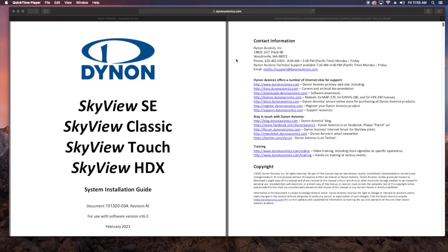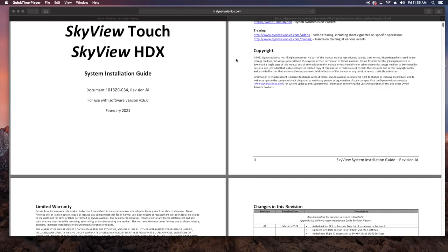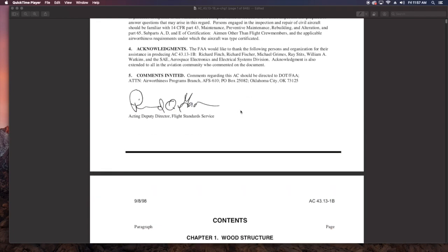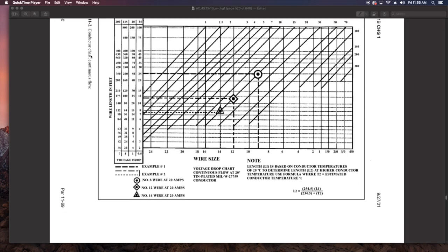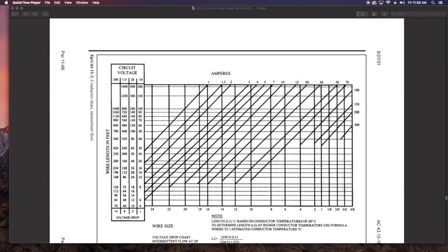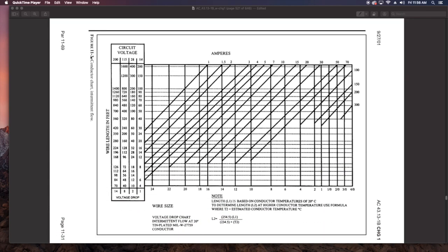I'll be referencing both the Dynon installation manual as well as the FAA AC4313-1B, specifically figures 11-2 and 11-3. Anyone building an airplane out there should be familiar with this document, but if you're not, it's full of what's considered standard procedure for all things related to building and maintaining aircraft.